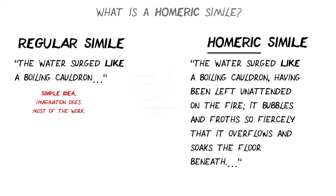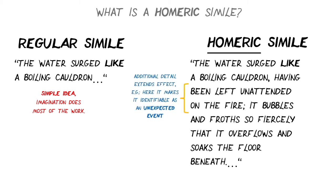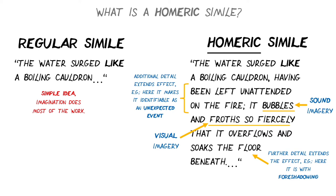For example, this bit here — the cauldron has been left unattended on the fire — it makes it identifiable as an unexpected event. We also have sound imagery, the bubbling, that onomatopoeic sound, and also some visual imagery: it froths so fiercely. And then you've also got further detail extending the effect — here we've got foreshadowing. If the water surging is soaking the floor beneath, then that's not a good thing, so maybe something bad is going to happen after this simile for the people experiencing it in the text.